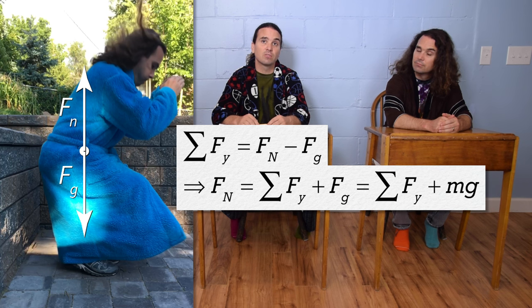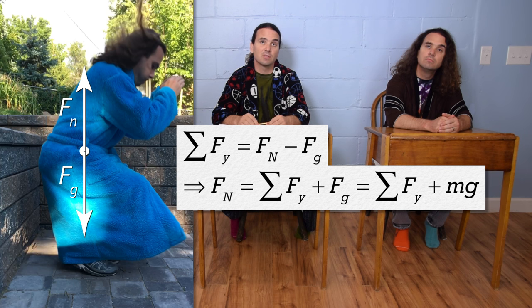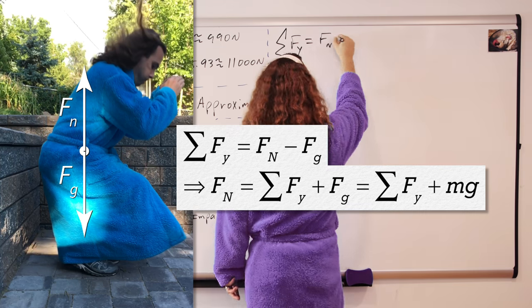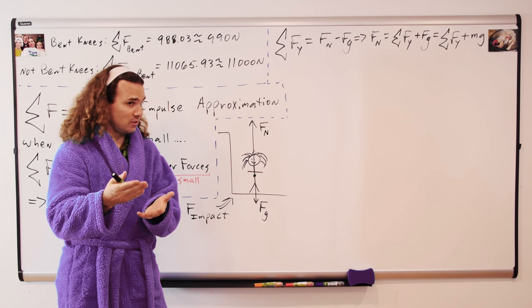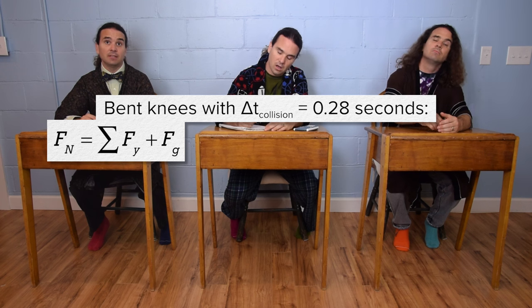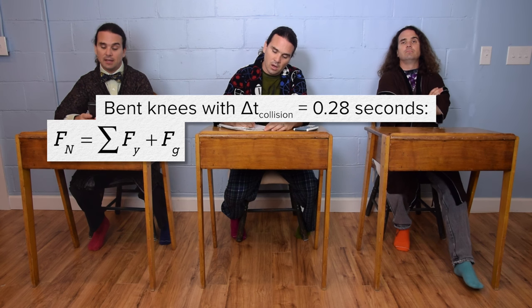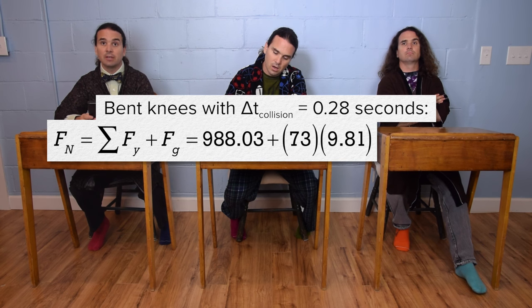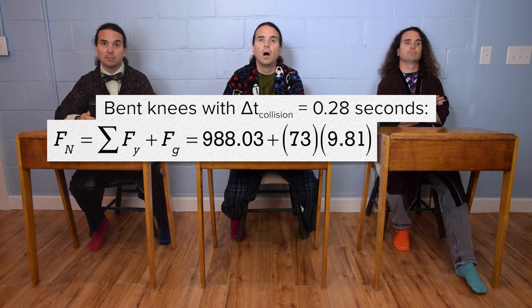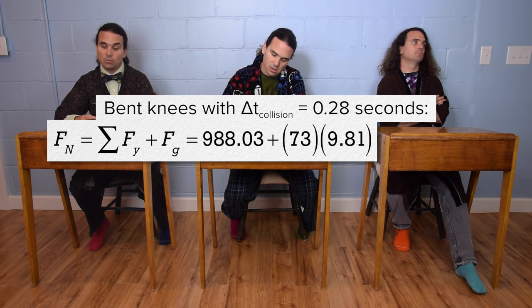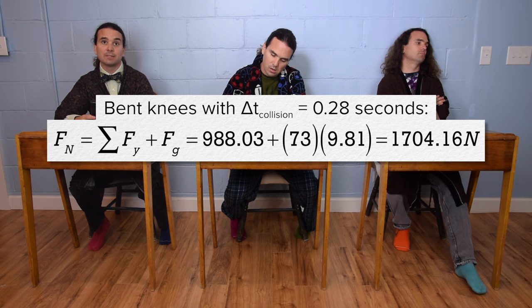And we know the force of gravity equation is mass times acceleration due to gravity. And Billy, please determine the force normal, which is the force of impact, during both collisions. When you did bend your knees, it is 988.03 newtons plus your mass, which we know from last time is 73 kilograms times 9.81 meters per second squared. That is 1,704.16 newtons.